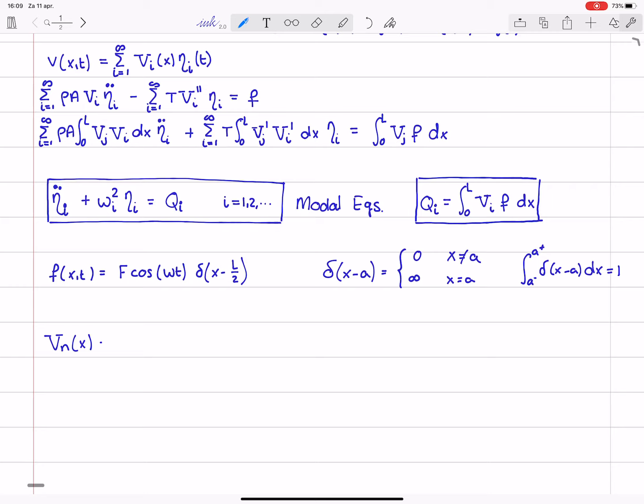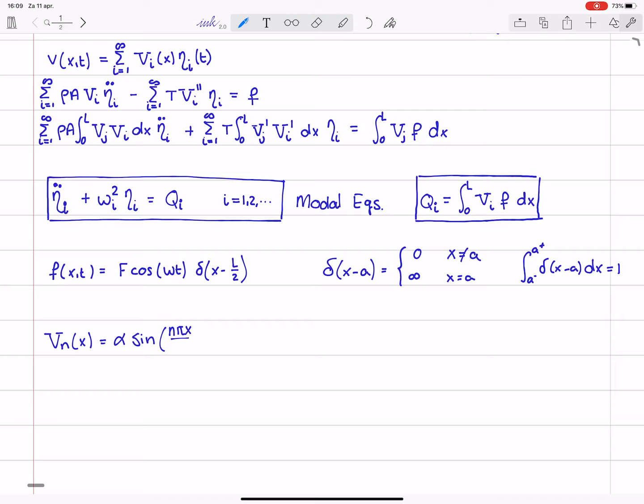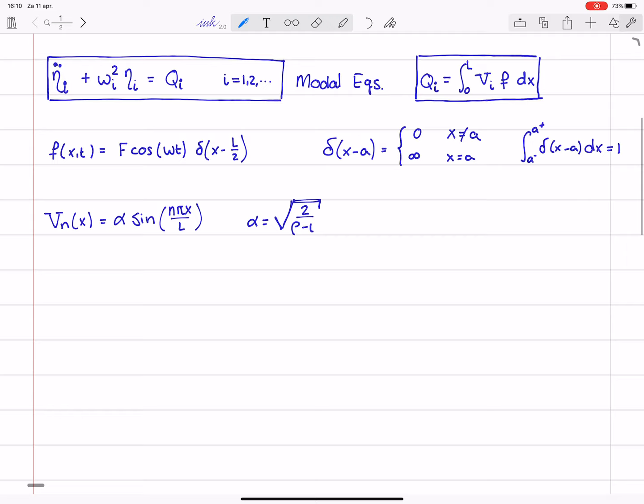Vn was alpha sine of n pi x over L, where alpha was the square root of 2 divided by rho AL. That was the expression for alpha for which we obtain mass normalization. Good.